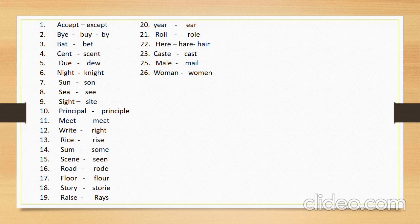Number twenty-five: 'male,' used for gender — meaning mard. Its similar in sound word is 'mail,' meaning to forward any message, like email. Number twenty-six: 'woman' — used for a single lady — meaning khatoon. Its similar in sound word is 'women,' used in plural — meaning khawatin. There are so many words: for example, 'there' (T-H-E-R-E) means wahan; its similar in sound word is 'their' (T-H-E-I-R), meaning un ke paas. These examples are given just for understanding purposes.